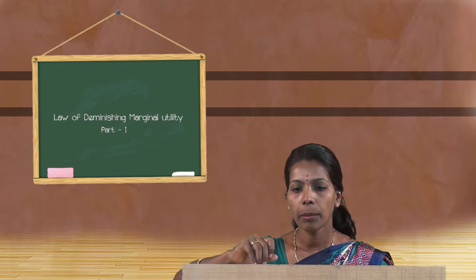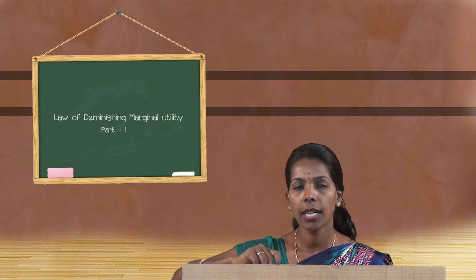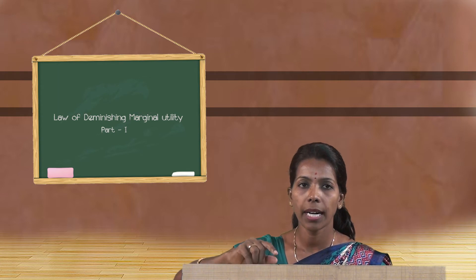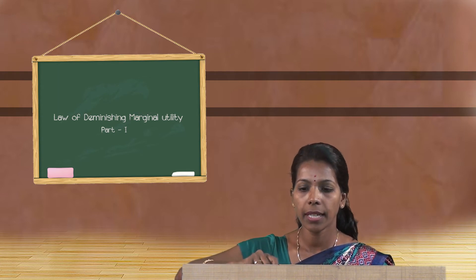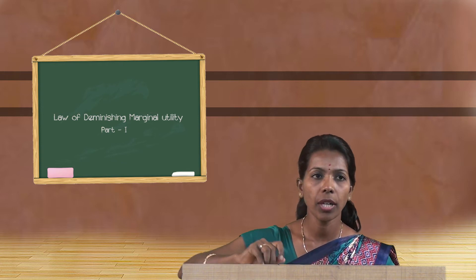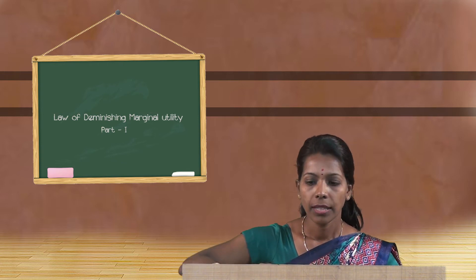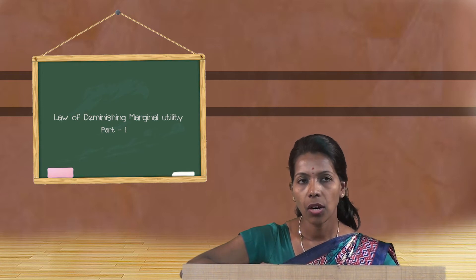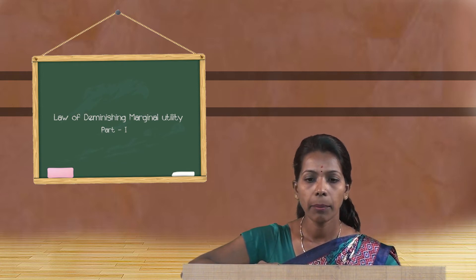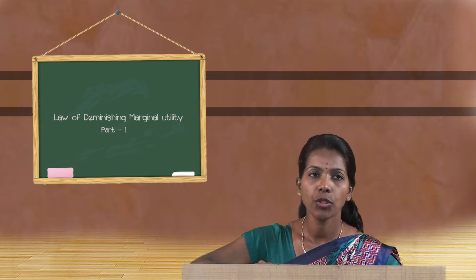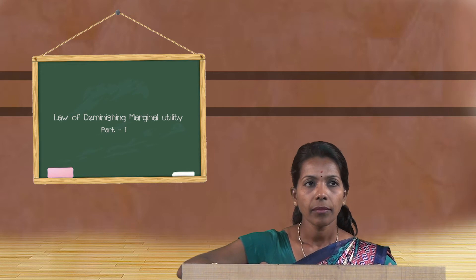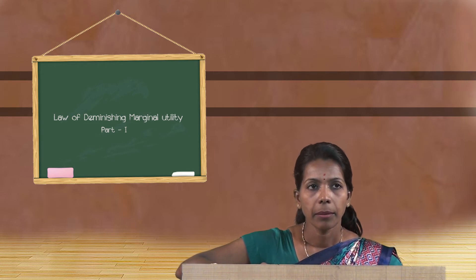Here we can understand that the additional benefit — that is, marginal utility — derived by a consumer from consuming an additional unit decreases as the consumer goes on consuming units of the commodity. Therefore, the Law of Diminishing Marginal Utility states that utility diminishes as the consumer consumes additional units of a commodity.